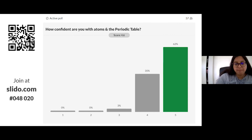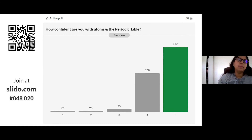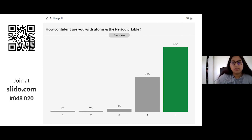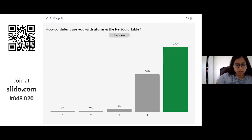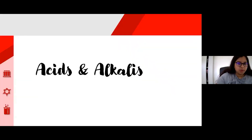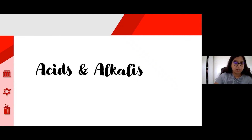I'm really happy to see lots of you on fours and fives — pretty confident. I know we covered some tricky stuff like electron diagrams and balancing equations. You're only in year seven so don't worry if you're a bit confused — you'll cover it in future years. Let's move on: we're going to do a bit of acids and alkalis and then have a quick break.